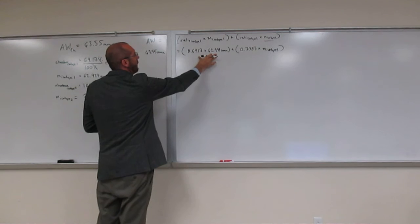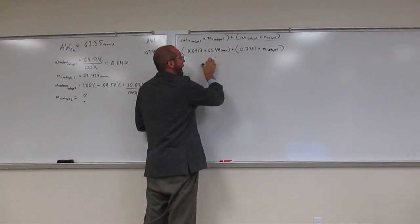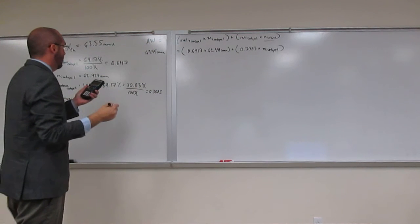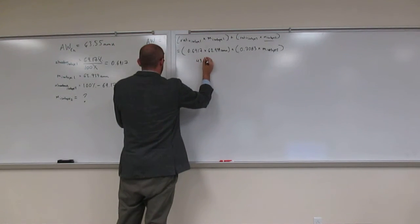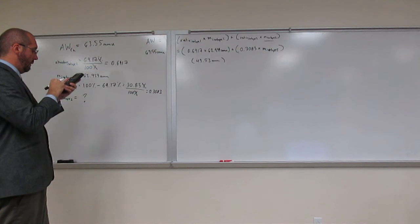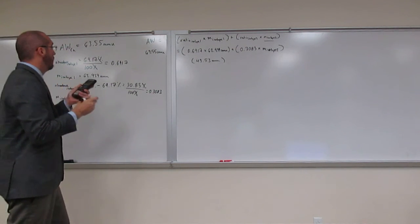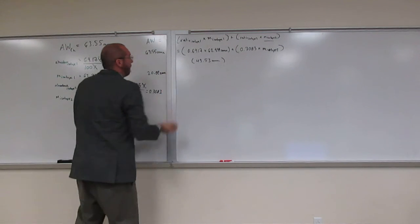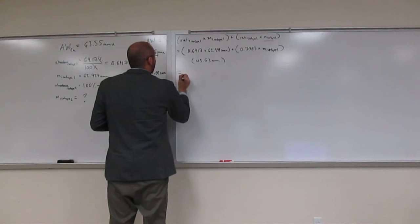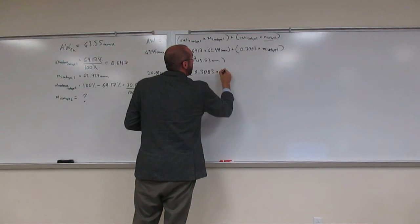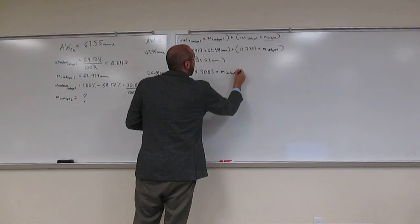With that, right, that 43.53, this is added to this other. This is like A plus B, right? So I can subtract this from this if we remember our algebraic rules. So what I'm going to do is take that 43.53 and subtract it from 63.55. So when I do that, I get 20.02 AMU, approximately.